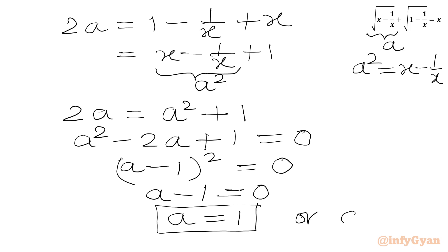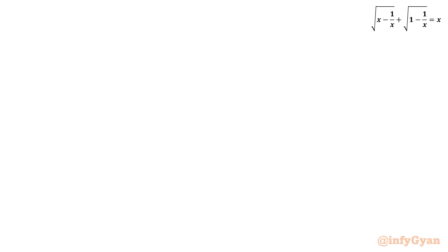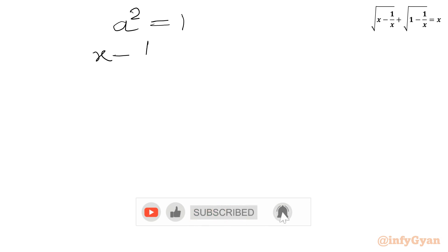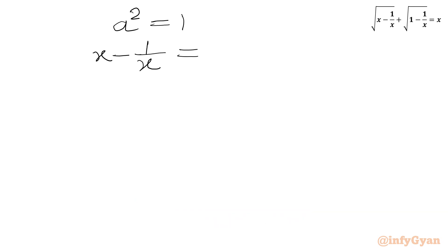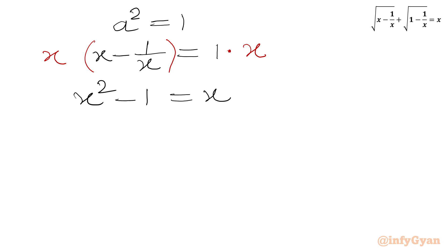Since a equals 1, we have a squared equal to 1. We know that a squared equals x minus 1 over x, so we write x minus 1 over x equal to 1. Multiplying both sides by x cancels the denominator, giving x squared minus 1 equals x, or equivalently x squared minus x minus 1 equal to 0.